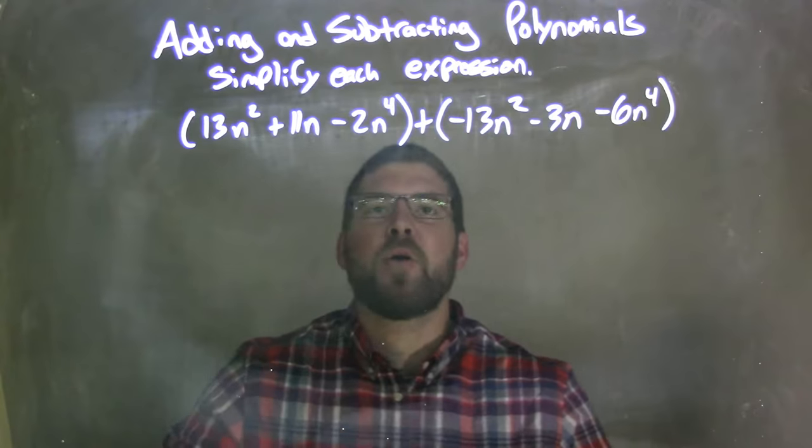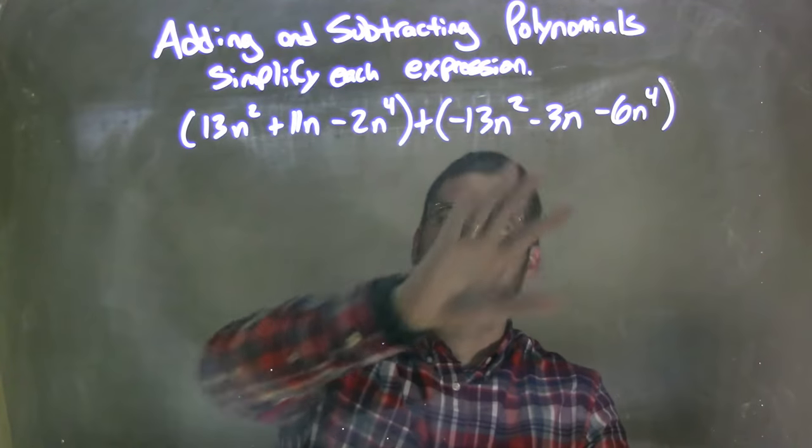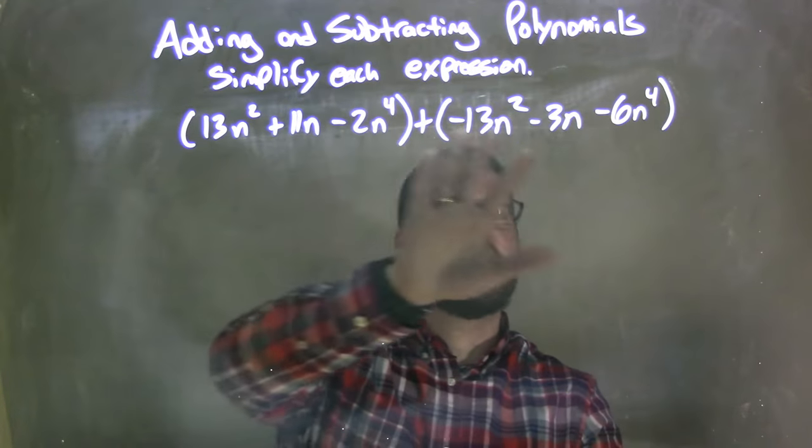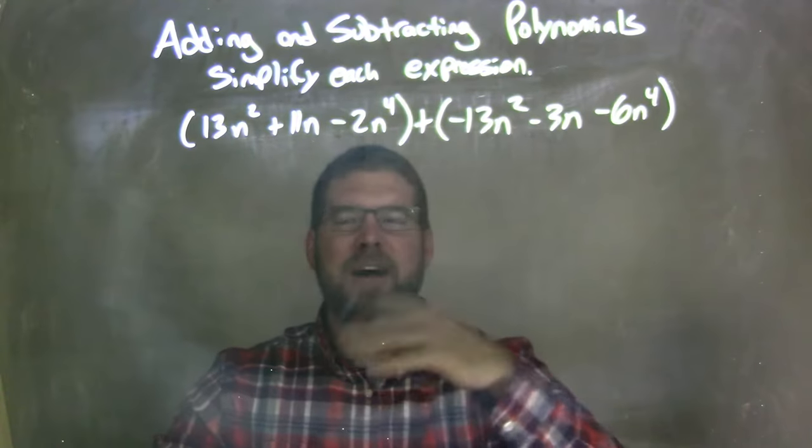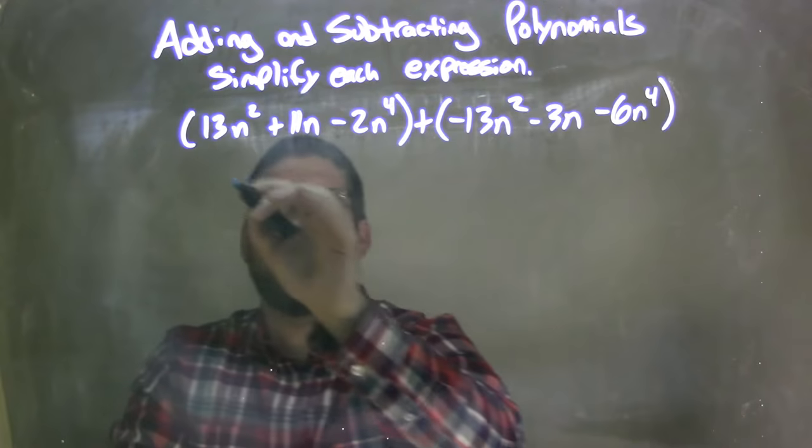From here, I'm now going to see within each parentheses, can I simplify anything? There's no like terms in each one, no. So now I'm going to rewrite all this, and instead of subtracting, I'm adding a negative. If you know my videos, you know I like doing that.